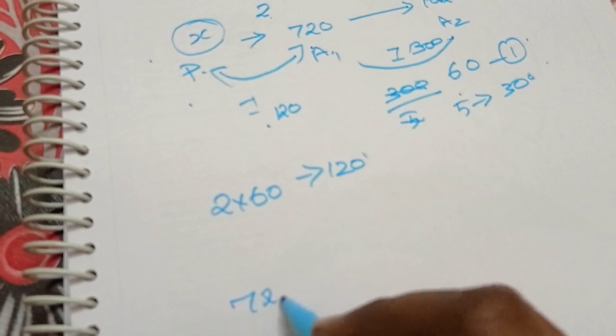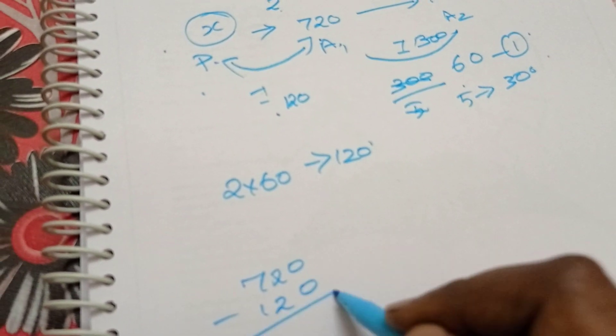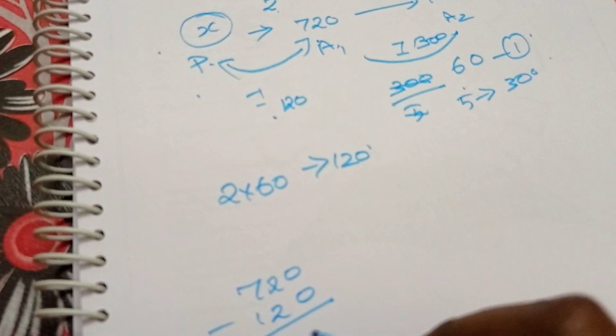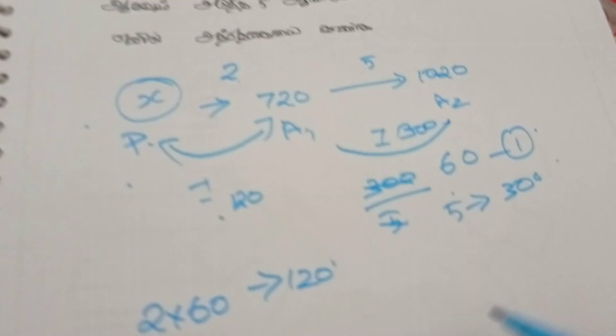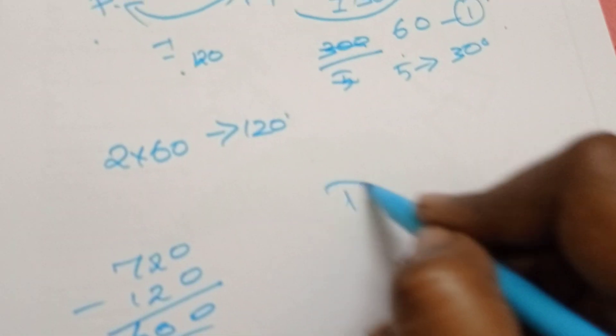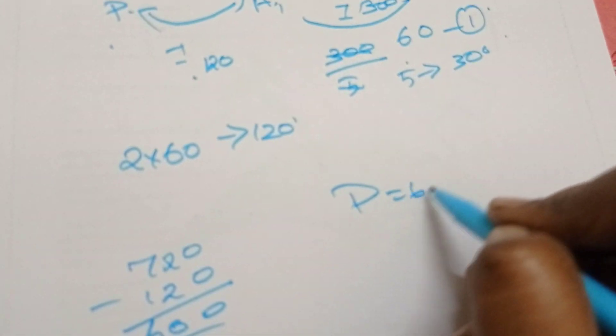720 minus 120 gives us 600. So the principal is Rs.600. The principal is 600.